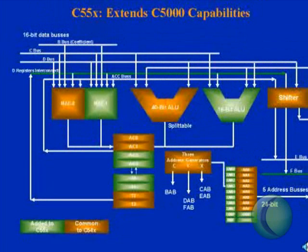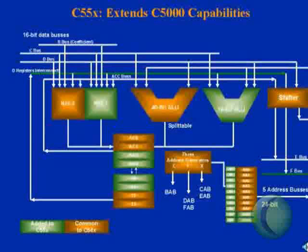These registers can be used in many different ways. The C compiler authors like them because they provide additional registers for temporary variables and local variable manipulation. The C5-5X is similar in many ways to the 5-4X, but extends the architecture with additional buses and additional hardware, thereby increasing the parallelism and the throughput.